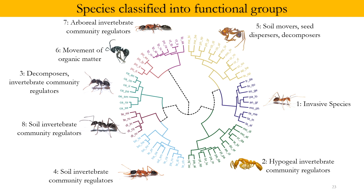By measuring key morphological features, we can group organisms into functional groups. Looking at community composition through the lens of the functions and ecological roles species play — rather than just species identity — gives us broader insights about ecosystem processes, and helps us discern the effects of climate change, biodiversity loss, or human influence on gaining or losing functional roles.